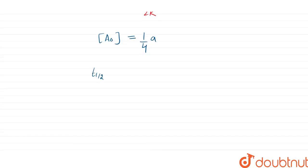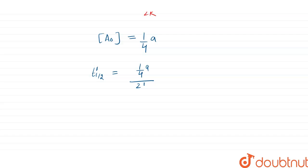So our new T half, that is let us say T half dash, will be equals to 1 by 4 A upon 2k. Now can I take ratio of equation 2 and 1? So by dividing,